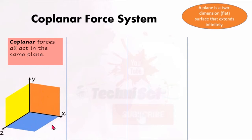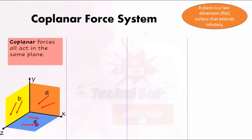Once we speak of coplanar forces, all the forces lie in one plane. The two forces in group A are coplanar, those in B are coplanar, and those in C are coplanar. But we couldn't say the forces in A, B, and C together are coplanar, because they are in three different planes.